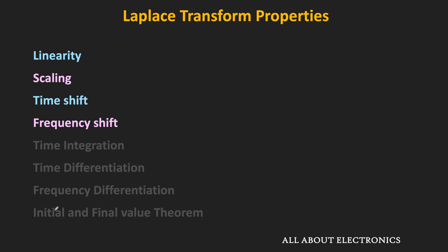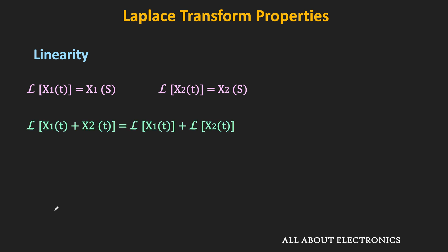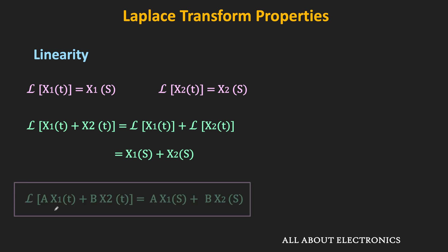First, let us start with linearity. In fact, in the previous video we have even used this property. As per this property, if the Laplace transform of x1(t) is X1(s) and x2(t) is X2(s), then the Laplace transform of x1(t) plus x2(t) equals the sum of their individual Laplace transforms: X1(s) plus X2(s). In general, the Laplace transform of a·x1(t) plus b·x2(t) equals a·X1(s) plus b·X2(s), where a and b are constants.